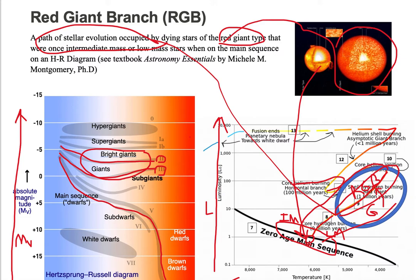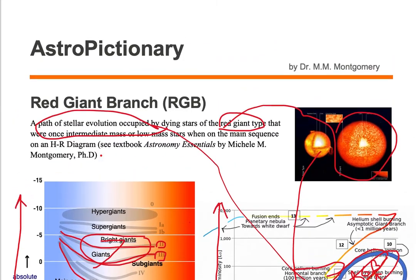When they're in this portion of the path we call that the red giant branch, which is between the subgiant branch and the horizontal branch. Not all objects will pass through a subgiant, but the red giant branch is occupied by these bright giants and giants that are dying off the main sequence and passing through the giant stage of stellar evolution.